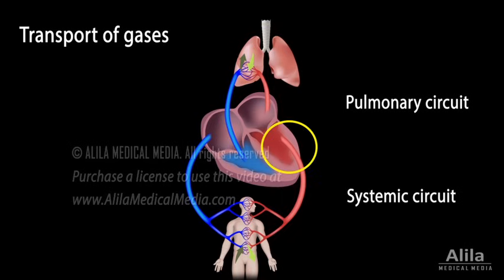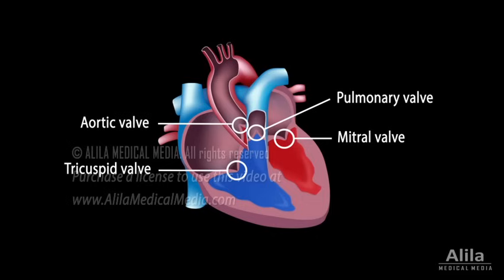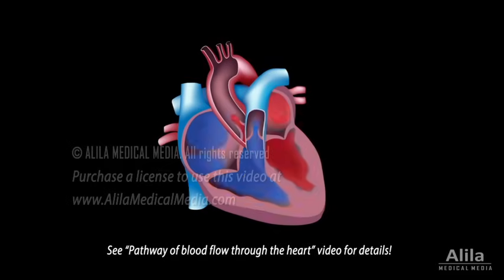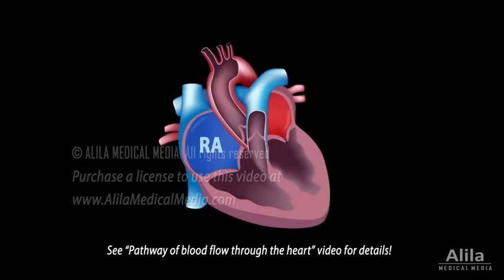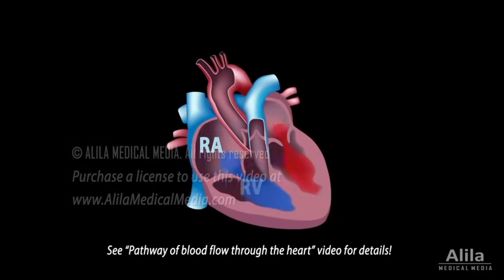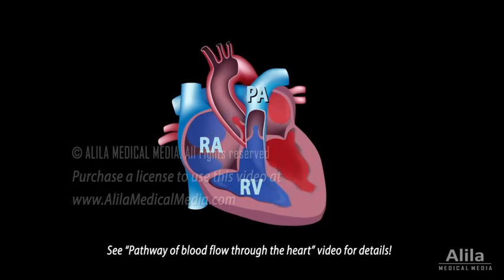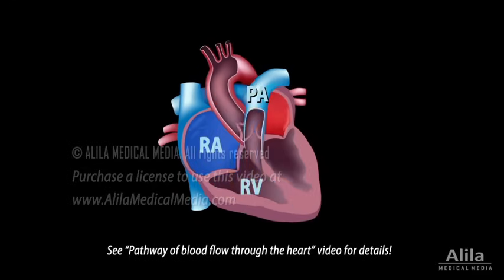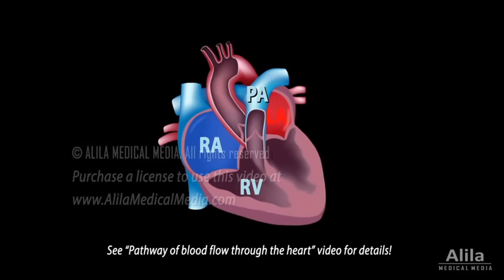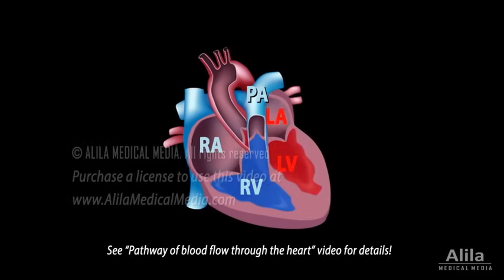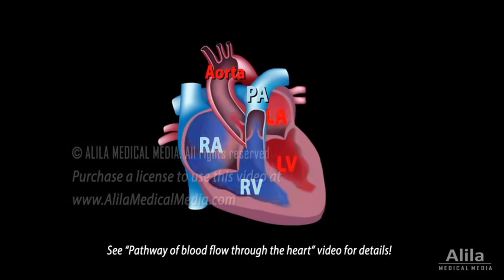Because the heart's left side has to pump blood to the entire body, it has much thicker muscle than the right side. There are four valves which serve to ensure one-way blood flow through the heart. Oxygen-poor blood flows from right atrium to right ventricle to pulmonary arteries, while oxygen-rich blood moves from left atrium to left ventricle to the aorta.